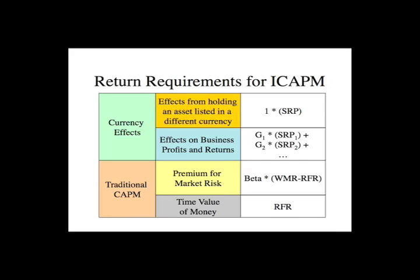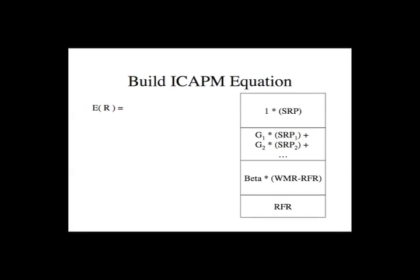Picking up here on the second half of this discussion of the International Capital Asset Pricing Model. We basically went through the idea that ICAP-M is the traditional capital asset pricing model — really the use of the security market line — that incorporates currency effects and shows how there are two different effects. So if we wanted to build the ICAP-M equation from what we talked about in part one, it's really fairly straightforward.